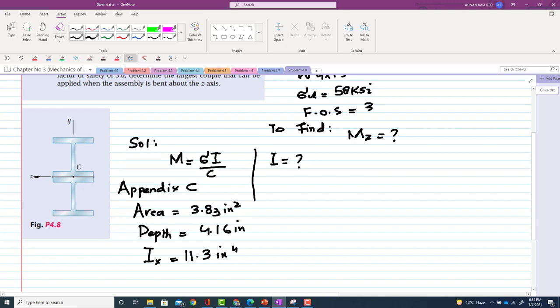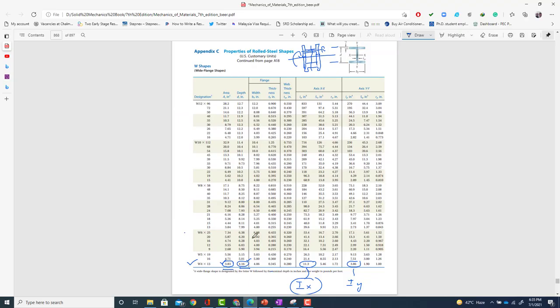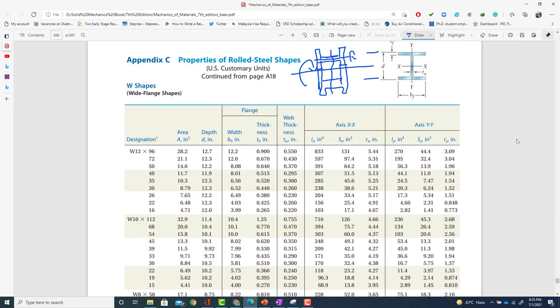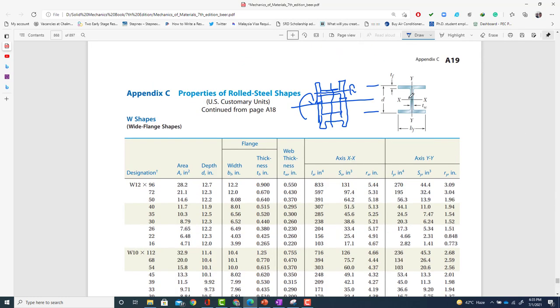If you watch this figure, this is the centroidal axis passing through the centroid, and you have to find moment about z. In this diagram, if I zoom it, you can see this is x and this is y.